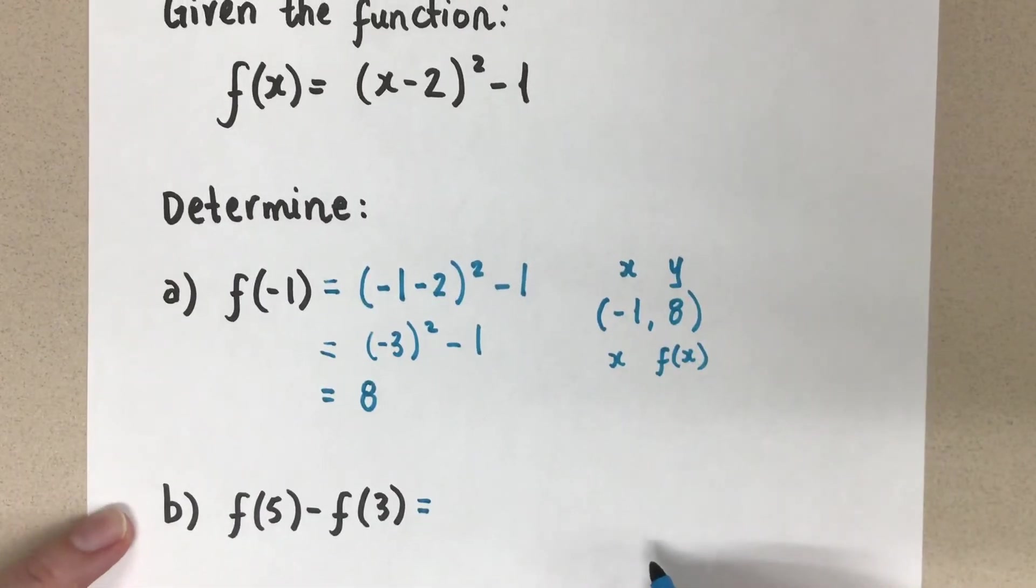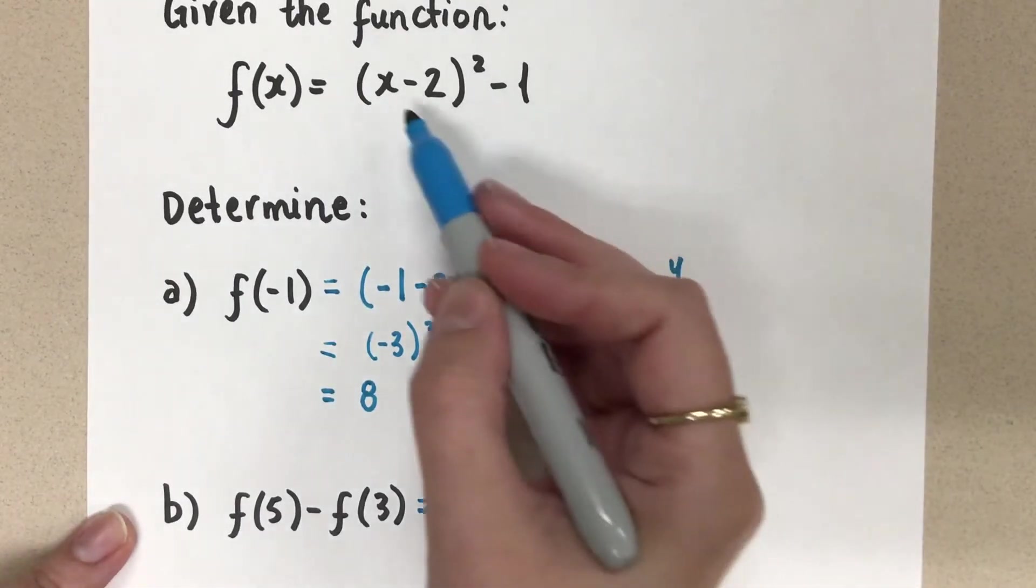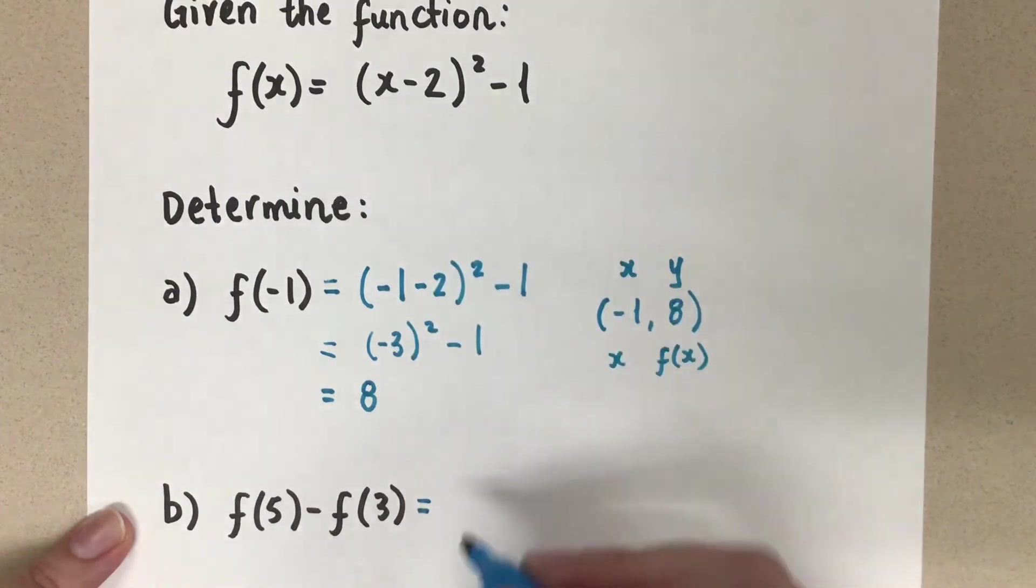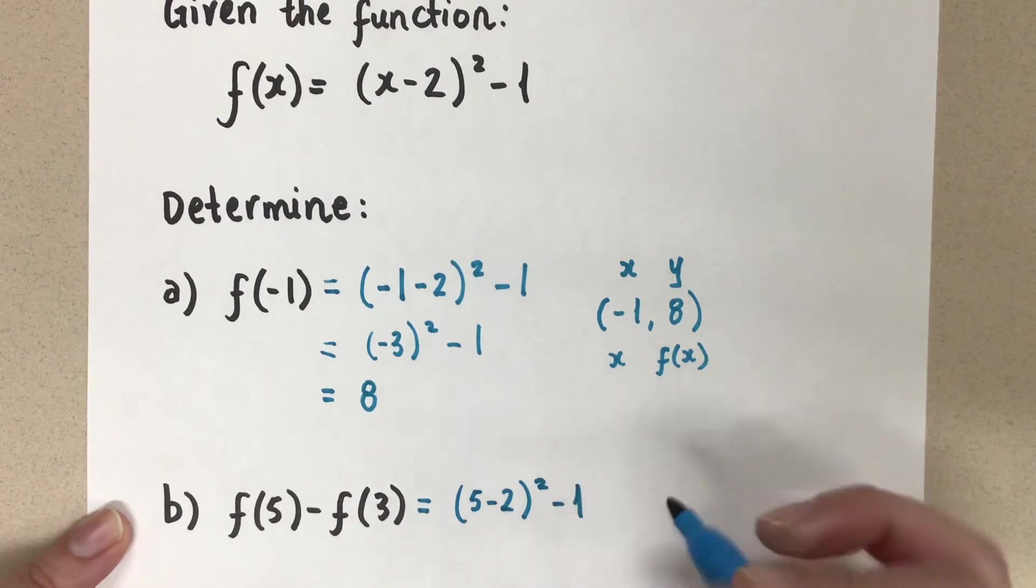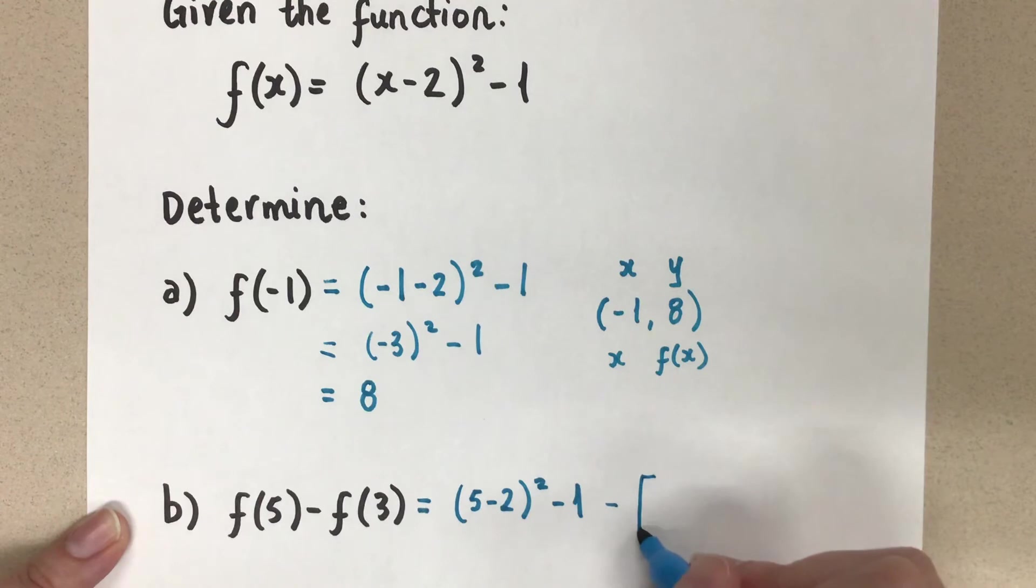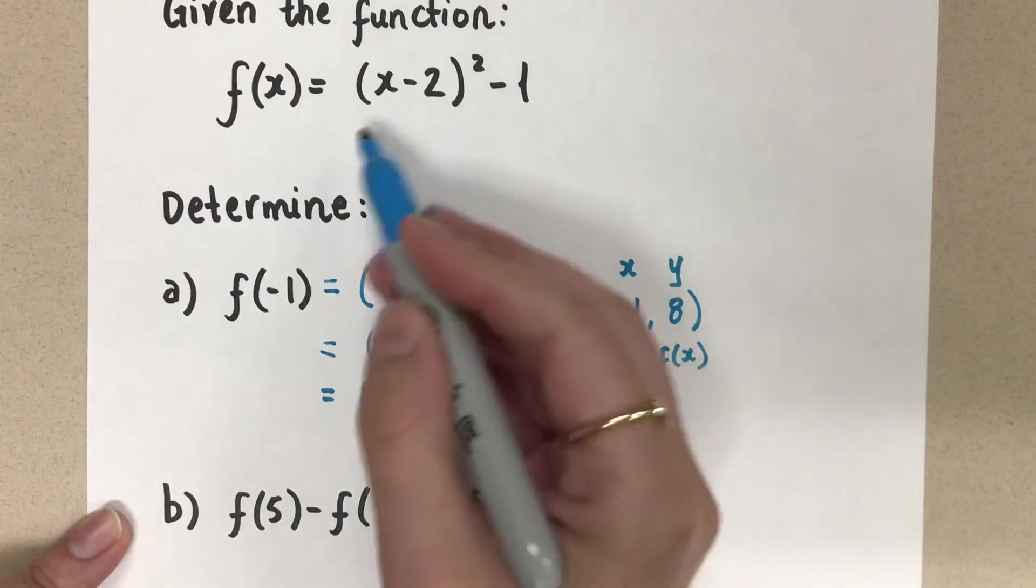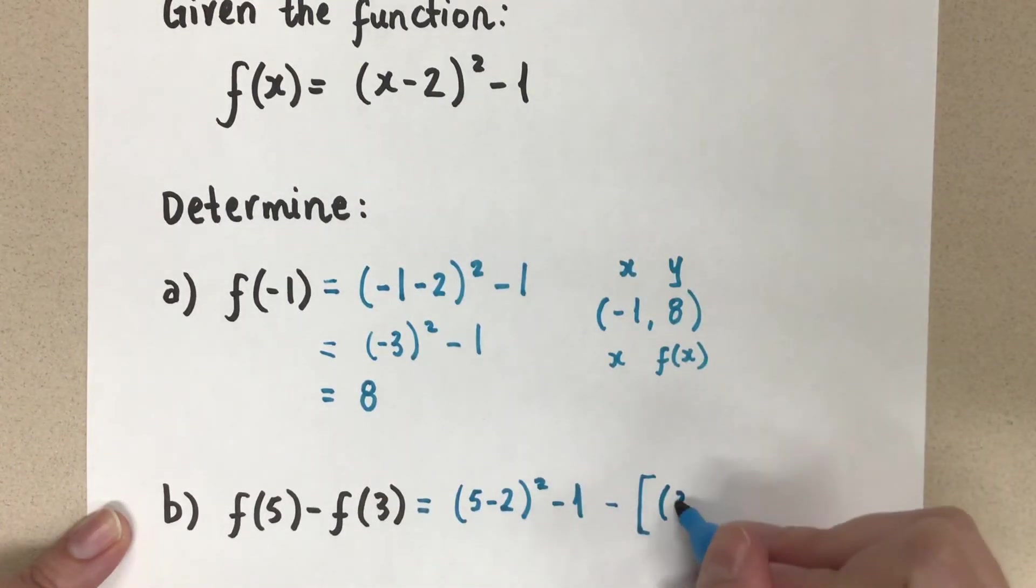So I'm going to take that. Remember that equation that we had? Let me just bring it back down here and I'm going to write it with the 5 in place of the x. So that's going to be 5 minus 2 squared and then minus 1. And then I'm going to do minus. Let me use brackets to make sure that I'm going to apply that minus to that whole f at 3. And I'm going to do the equation again. This time I'm going to sub in a 3.